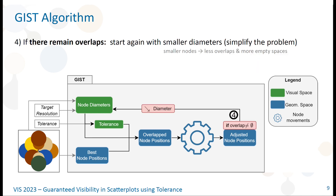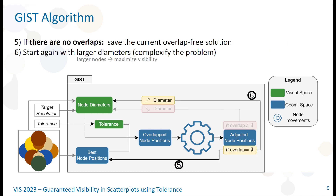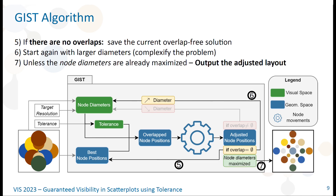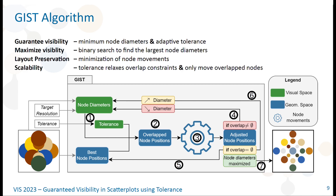If there remain overlaps in the adjusted layout, we start a new loop in the algorithm with smaller node diameters. If there is no longer any overlap, we save the current solution and start a new loop with larger node diameters, unless the binary search is stopped. Its stop condition is when the difference between two consecutive node diameters is lower than a threshold. In that case, we return the best node positions that were found during the optimization. For a more detailed description of the algorithm, please refer to the article.